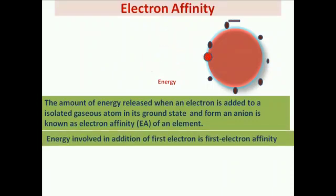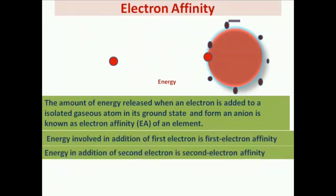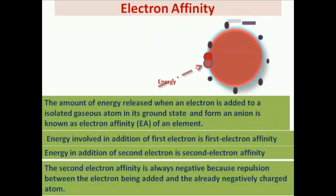The energy involved in the addition of the first electron is the first electron affinity. If another electron is added to the same atom, the energy involved is the second electron affinity. Second electron affinity is always negative because of the repulsion between the electron being added — which is negatively charged — and the already negatively charged atom, since like charges repel.